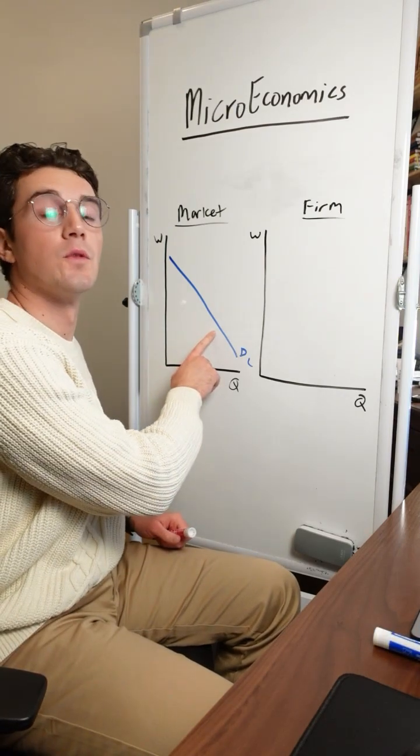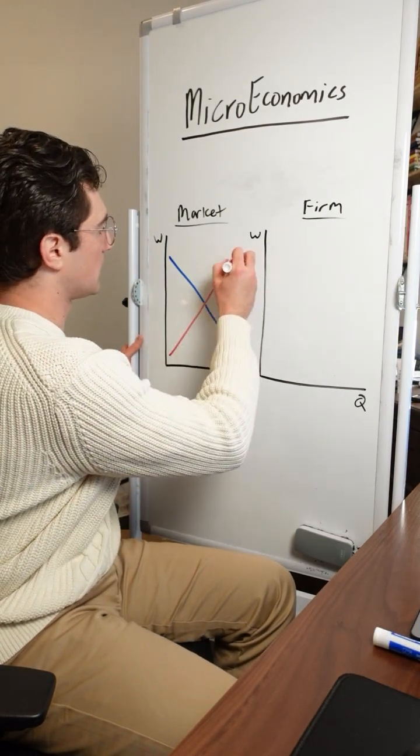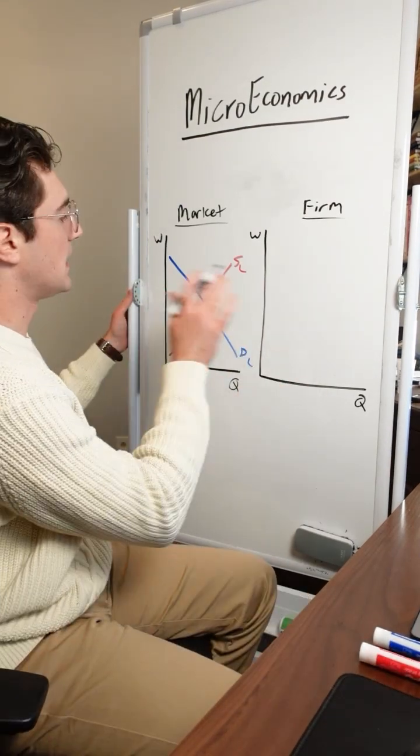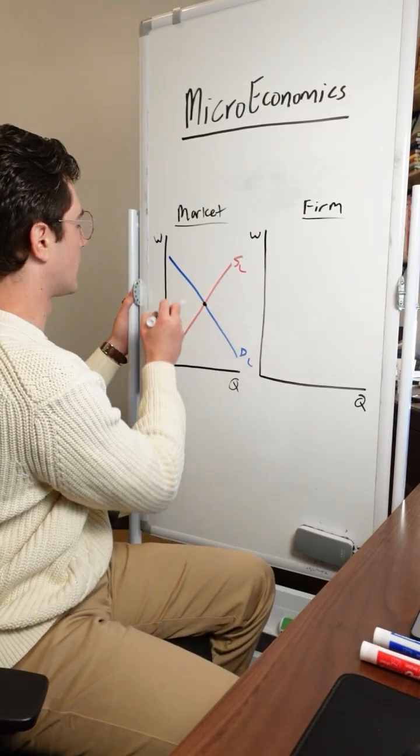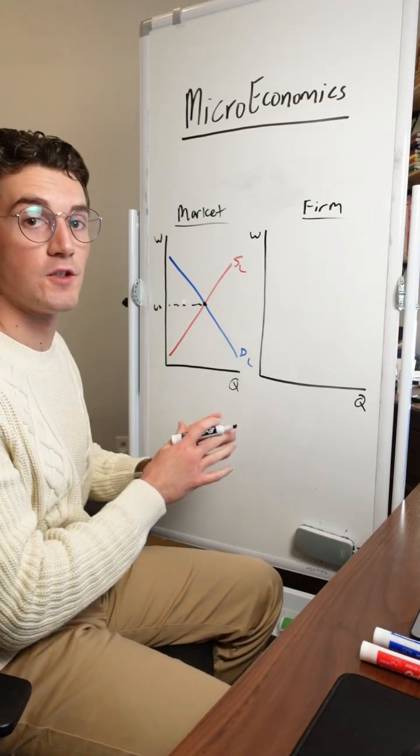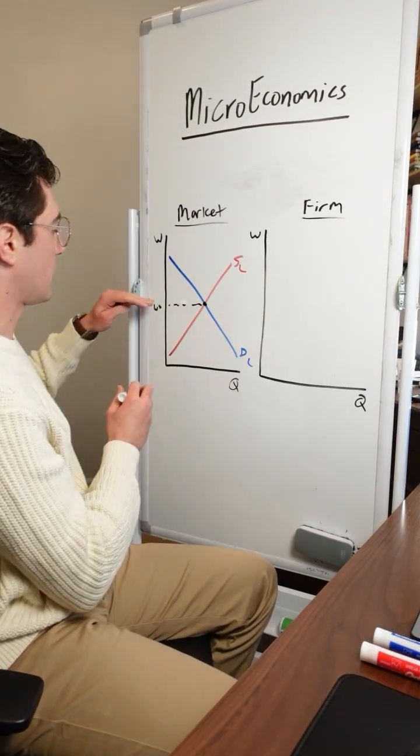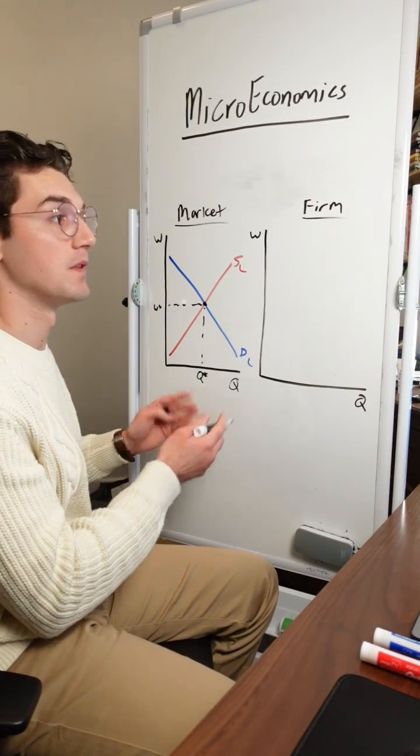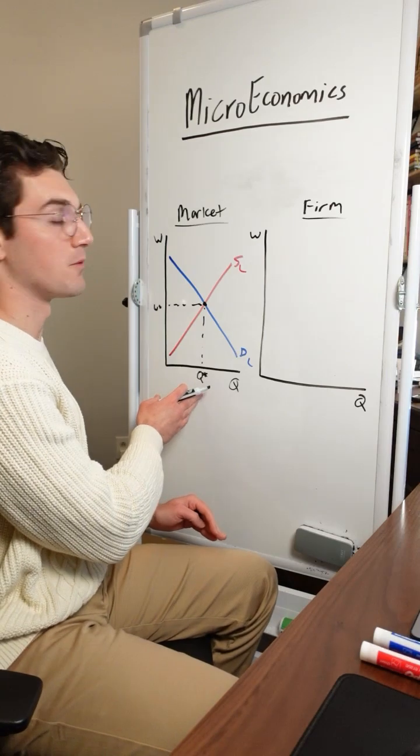Remember, firms are the ones who demand labor. And then we've got the upward sloping labor supply curve. These are individual people who are willing to work. The intersection of these two curves determines the equilibrium wage. Notice that we're not working with price here, it's wage because we're working with the labor market. So at this equilibrium wage, this many people are willing to work, and firms are willing to hire the same amount of people. It's where the labor market rests.